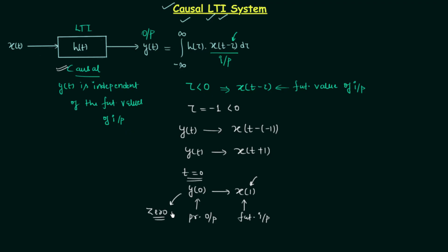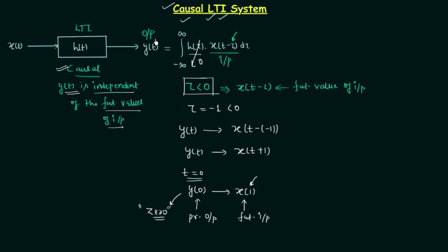We have already defined our system to be a causal system, and in causal systems the output is independent of future values of input. Here x(1) is the future value of input, so y(0) equals 0 because it is independent of future values of input. The same will happen whenever τ is less than 0 — x(t minus τ) becomes the future value, and y(t) becomes 0. Since we assume x(t minus τ) is not equal to 0, to make y(t) equal to 0, h(τ) must be 0.